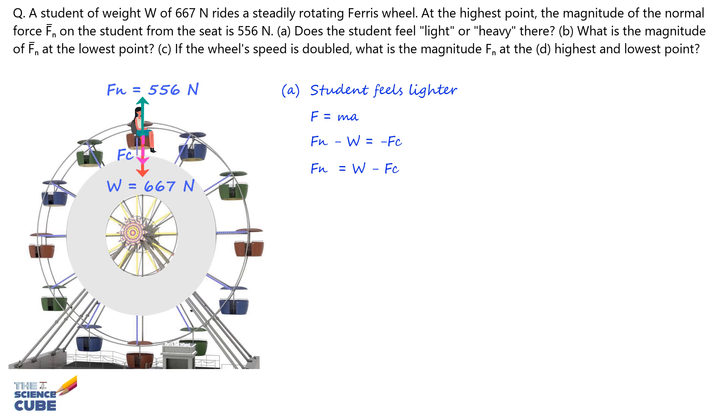Now, W and Fc are positive quantities or magnitudes since we have already applied the relevant signs. Therefore, we can see that Fn is less than the real weight W by a magnitude of centripetal force Fc, and hence the student feels lighter.